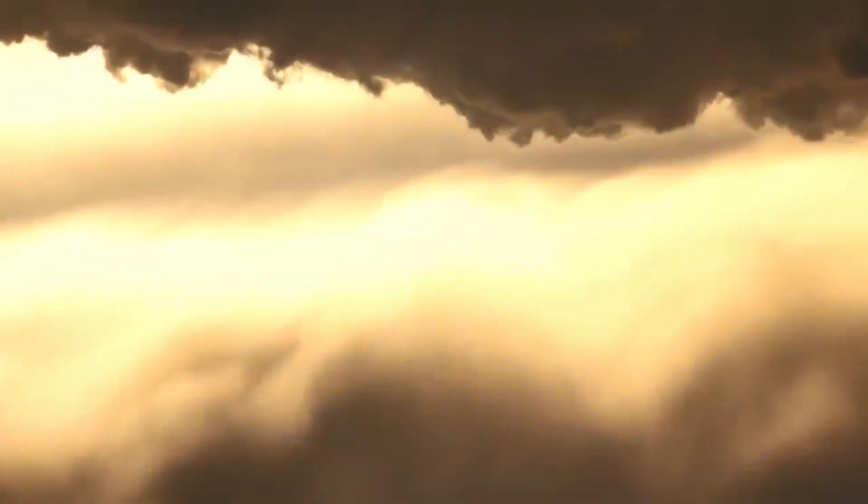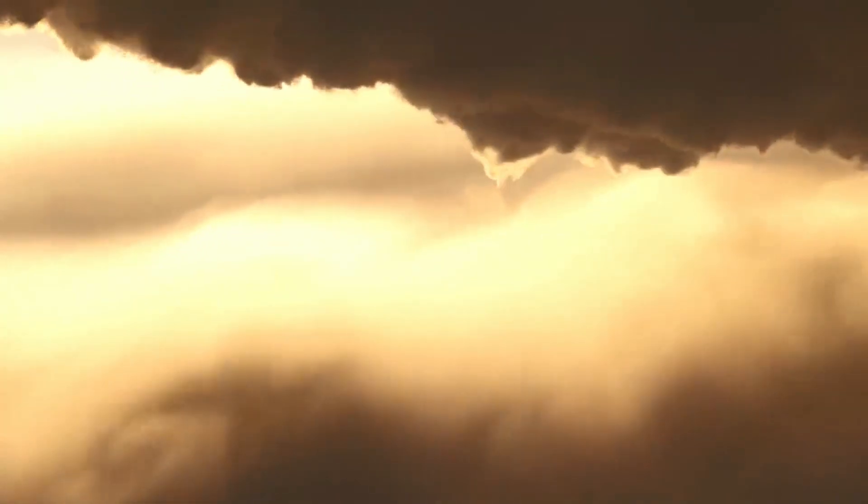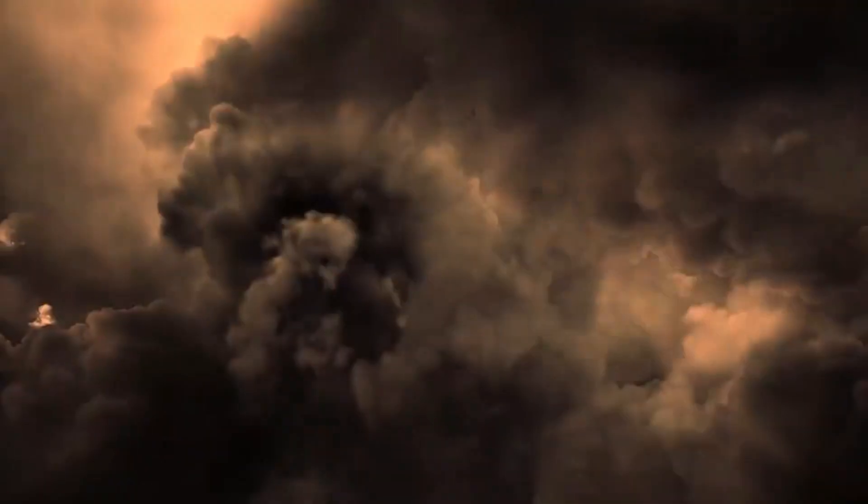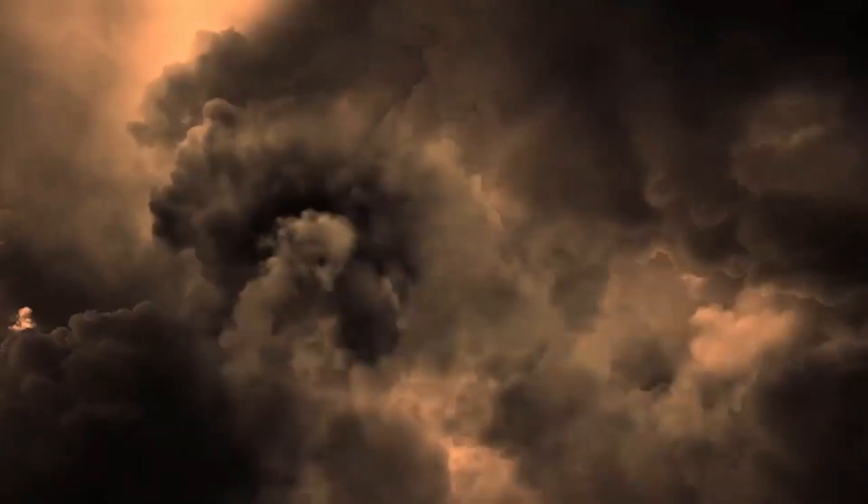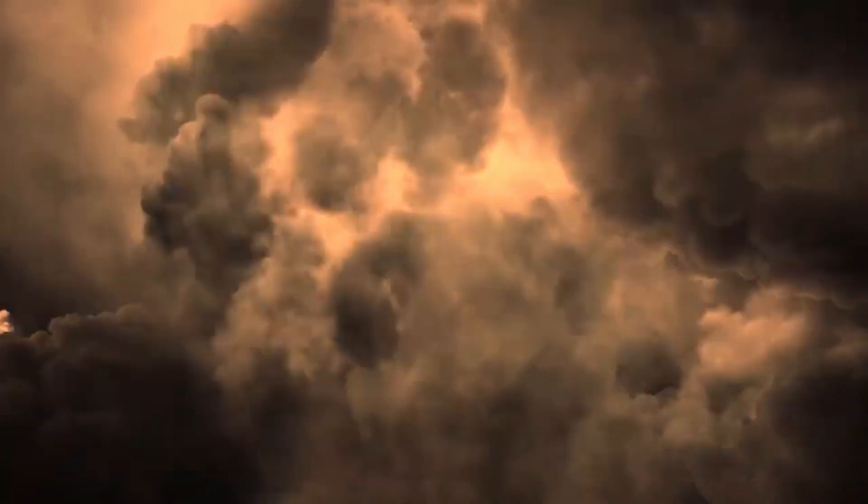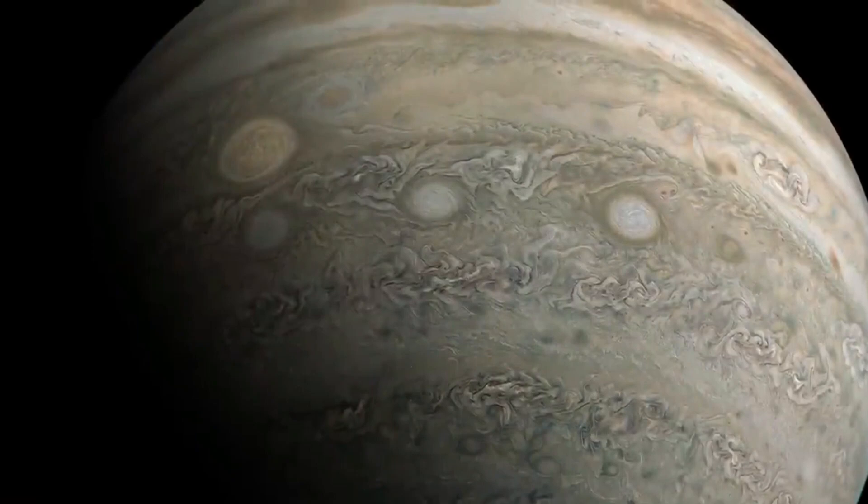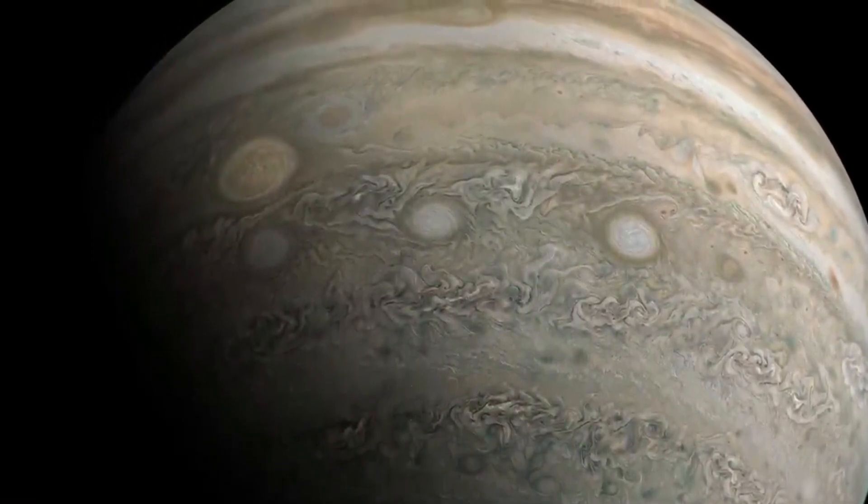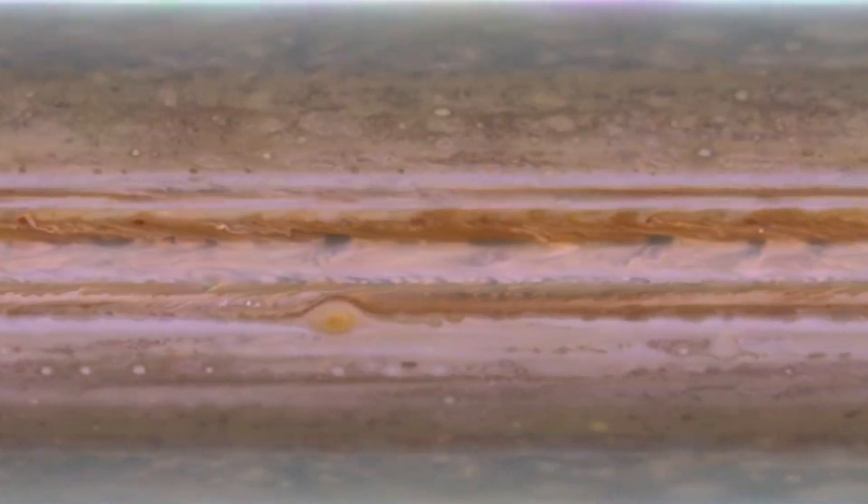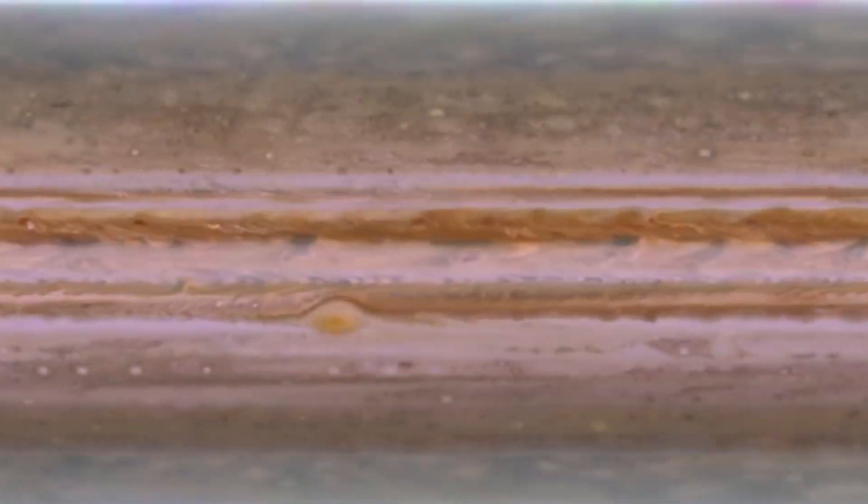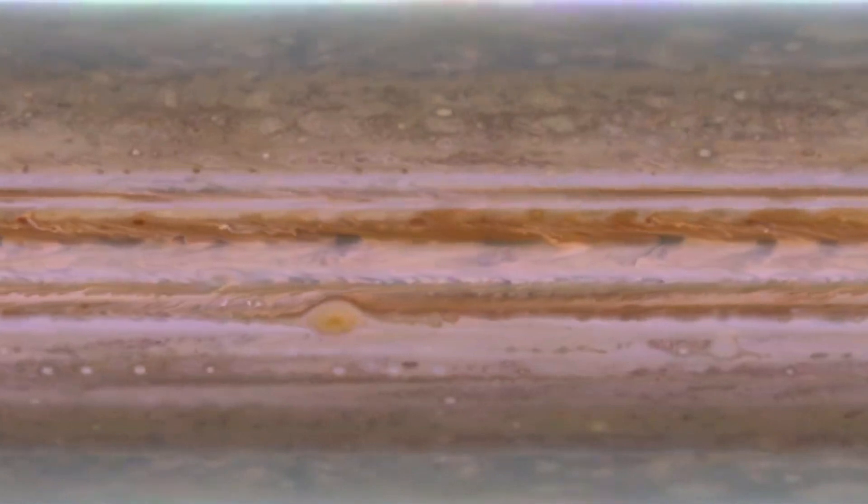Because hydrogen gas gets denser and hotter as it gets closer to the planet's core, thousands of kilometers down, and because the pressure is so high, hydrogen gas gradually changes into a strange electrically charged soup of metallic liquid. This is far below the clouds we can see.